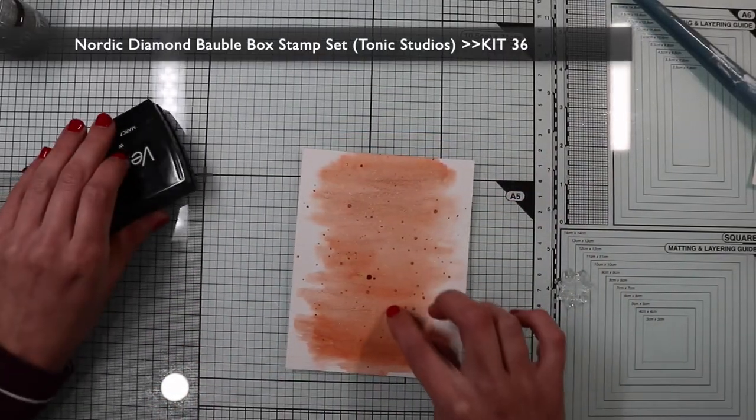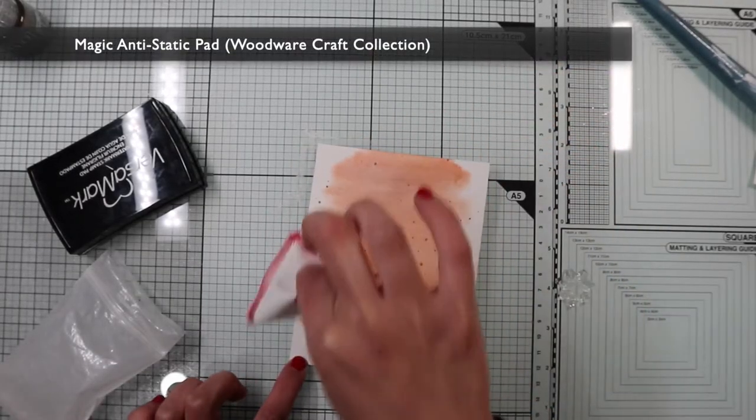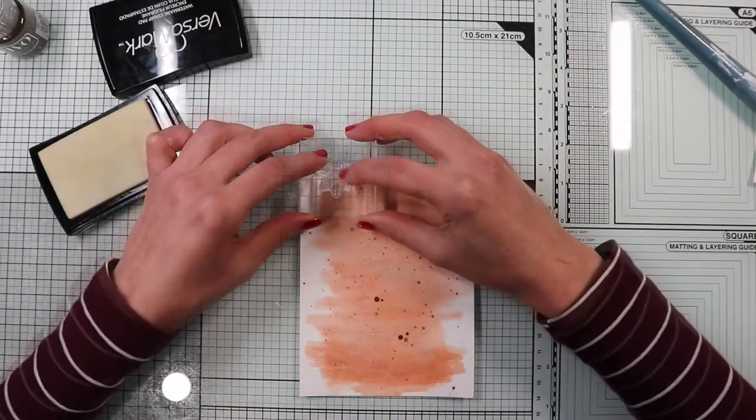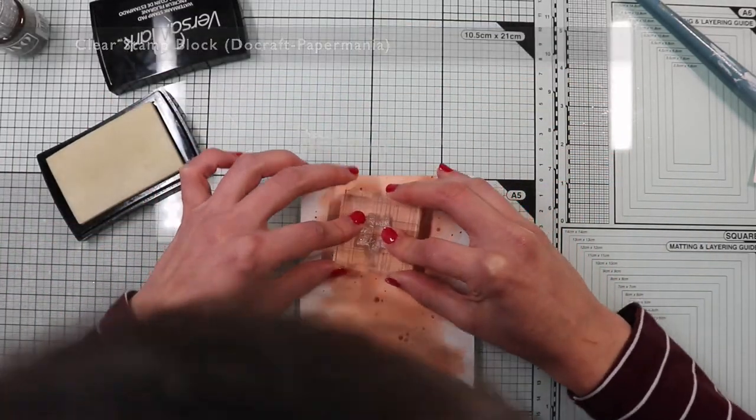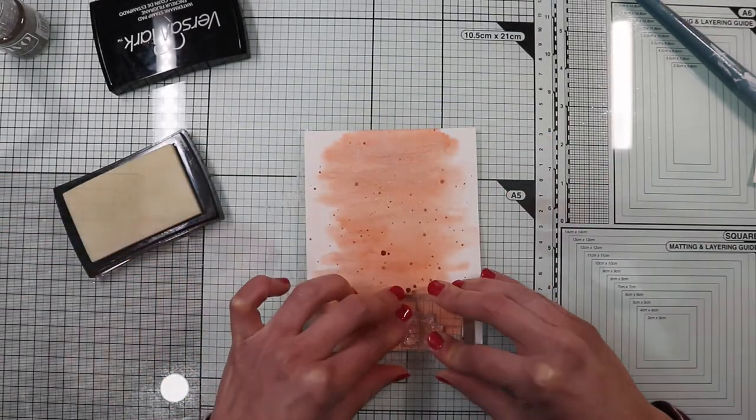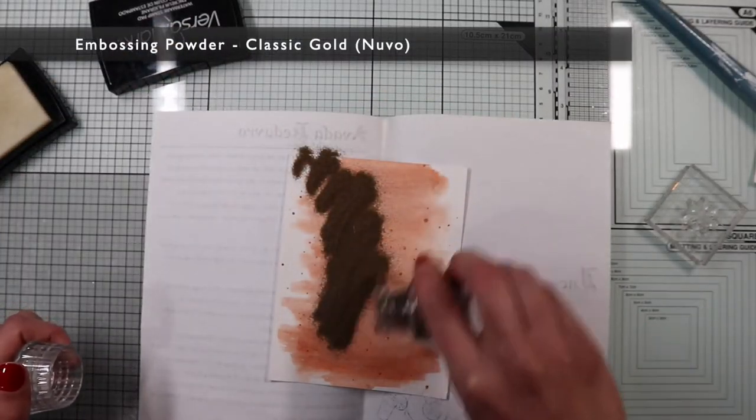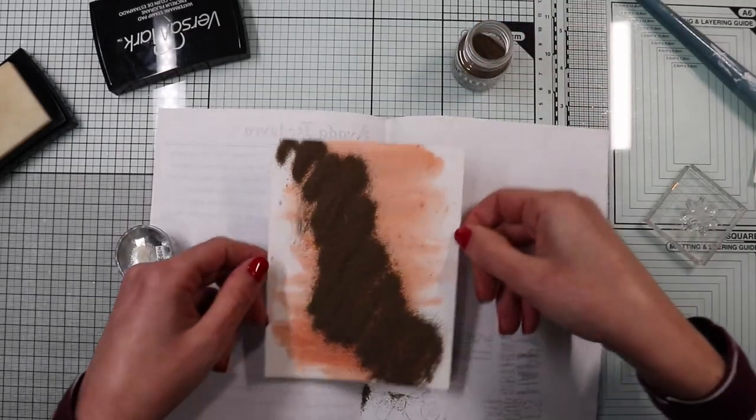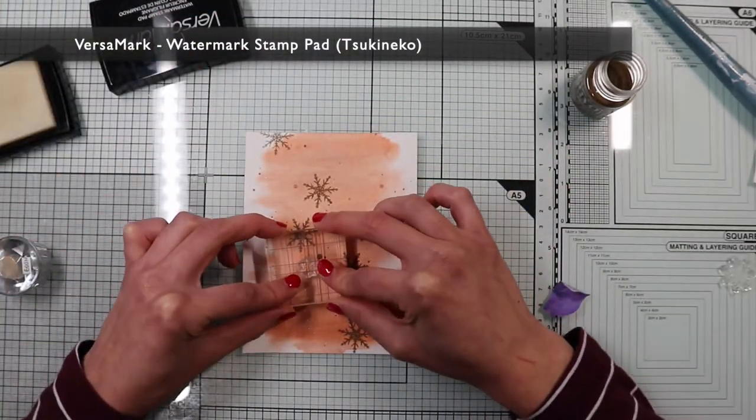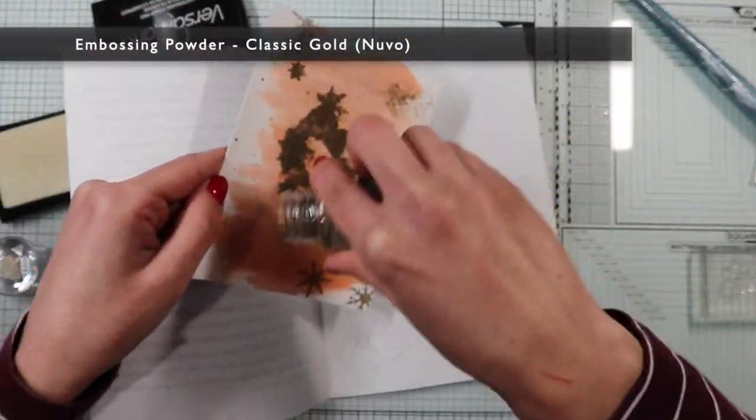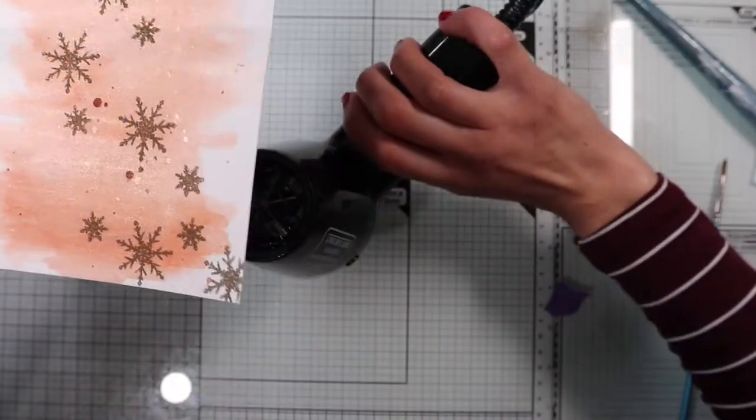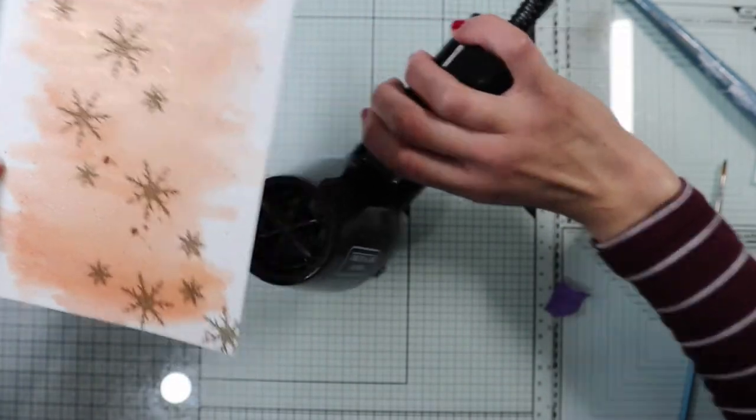If you want, you can add other details on the background, such as random stamps. I'll use the snowflakes from the kit. I'm going to stamp them with my clear Versamark ink because I go for a hot embossing technique with a gold embossing powder. I clean the stamps and I'm ready to melt the embossing powder with my heat tool.